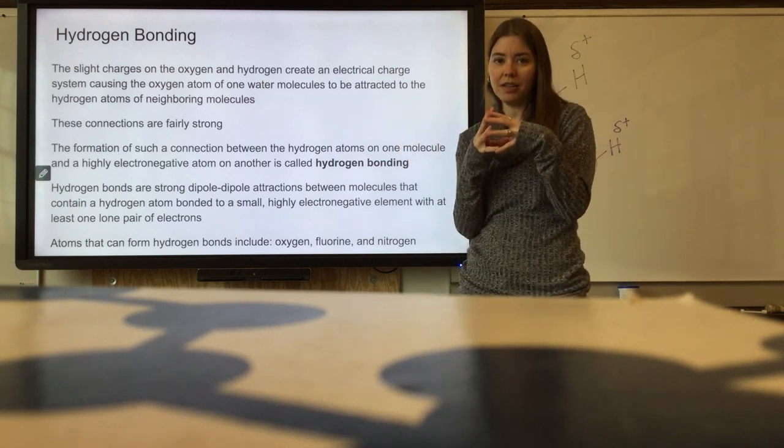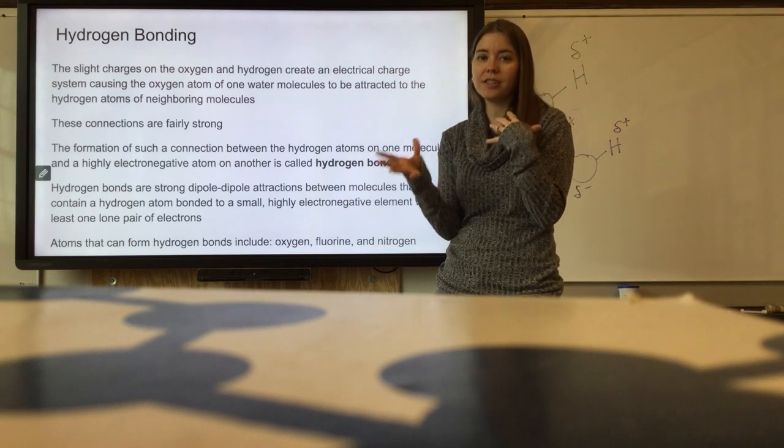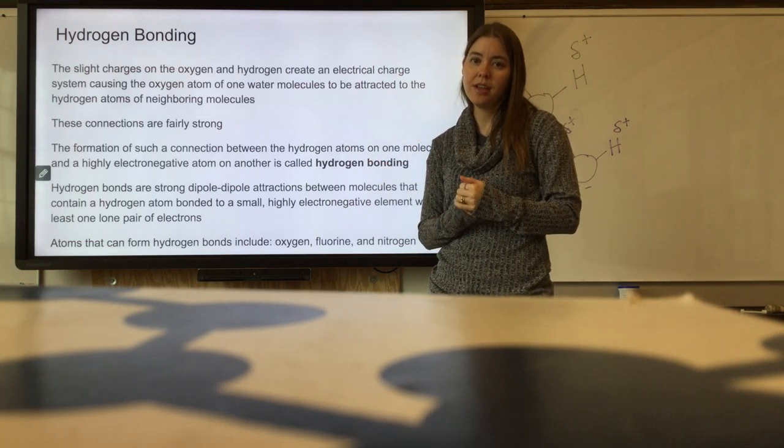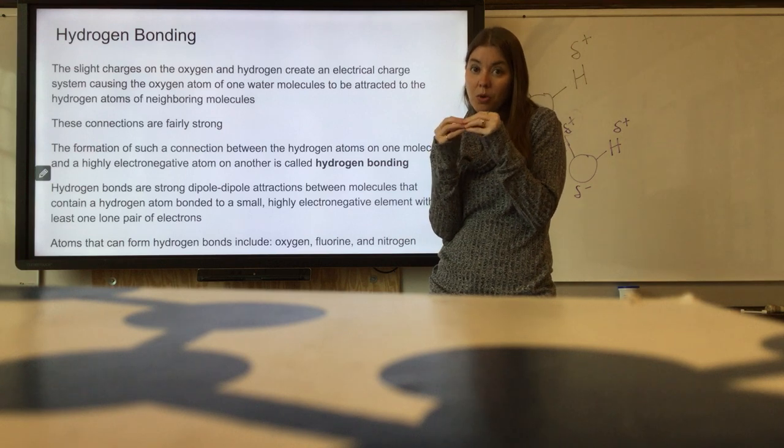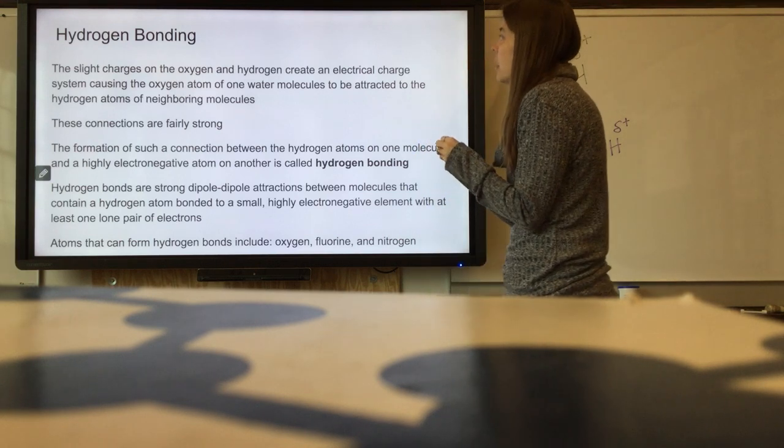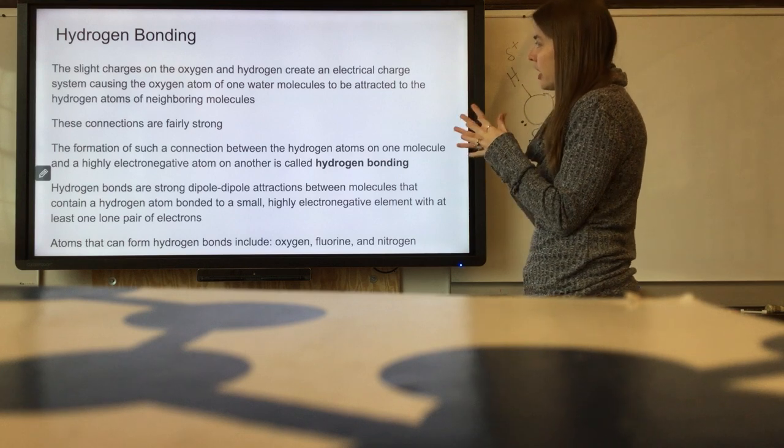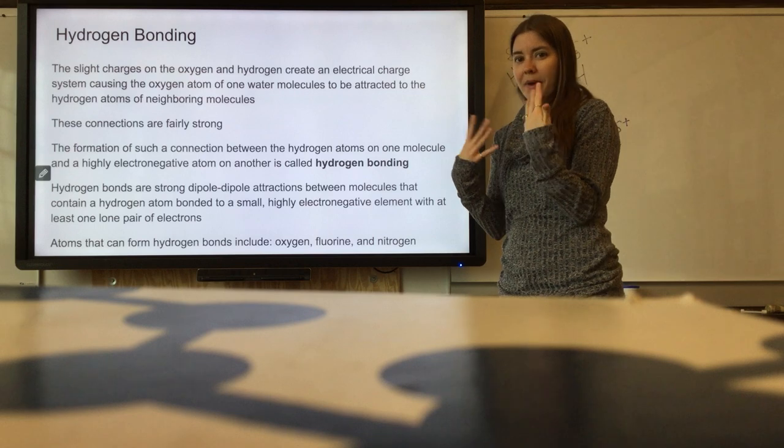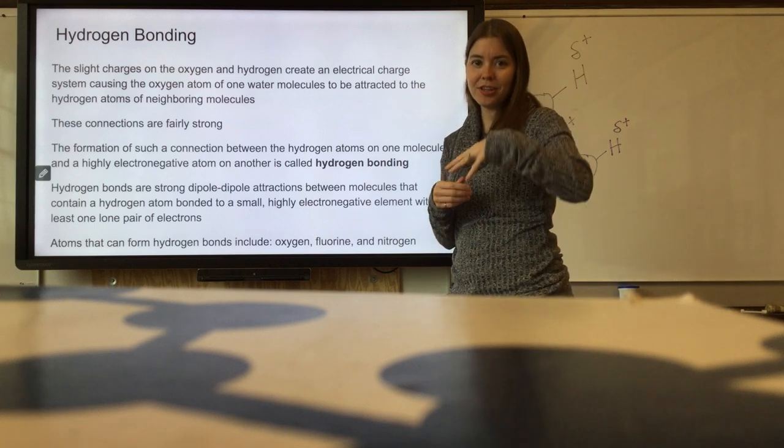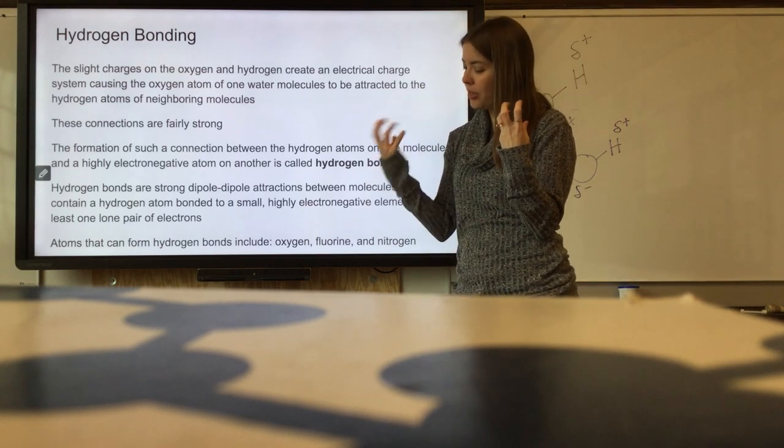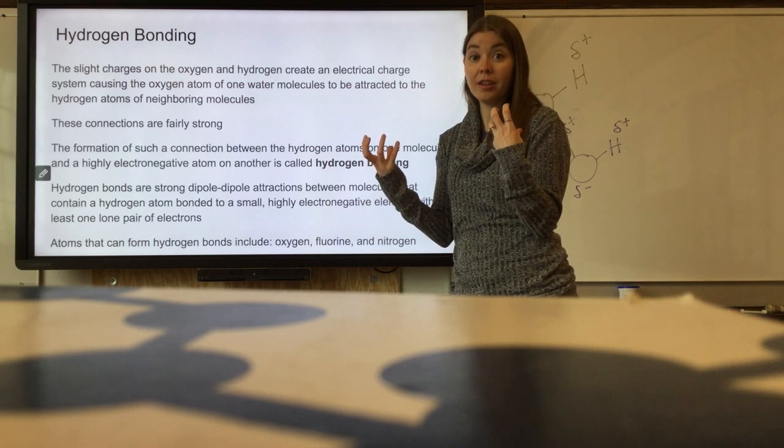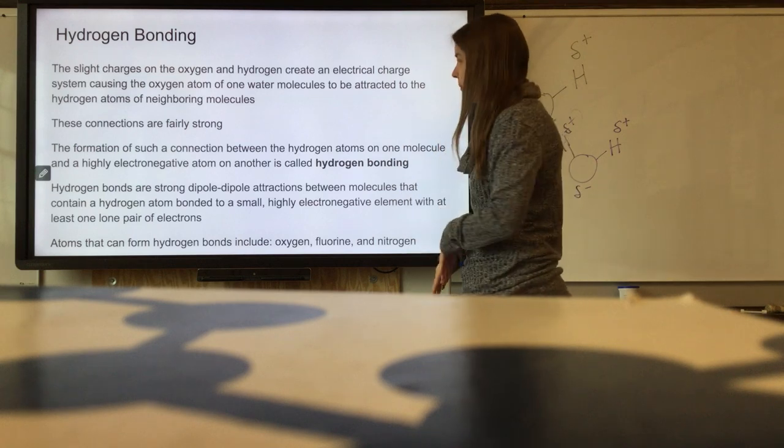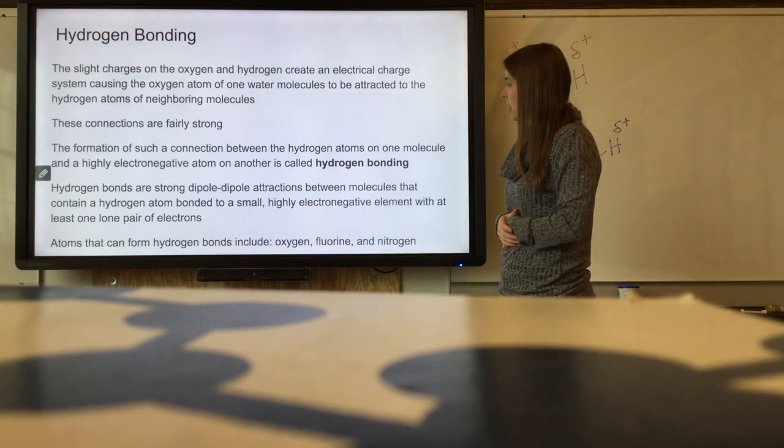And those lone pairs of electrons will actually bond together, will actually stick those two water molecules together. It is referred to as hydrogen bonding because that hydrogen is slightly positive, it will be attracted to lone pairs of electrons, and they will bond together. These connections are fairly strong because you have, in a sense, like a semi-ionic bond happening because you have that slight positive charge and those negatively charged electrons holding those molecules together. So it's called hydrogen bonding.